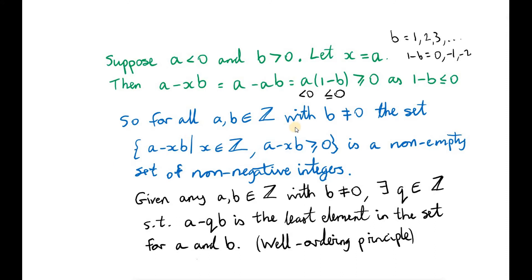Now we've covered all the cases. So for all integers a and b with b not 0, the set of values a minus xb, where x is an integer and a minus xb is non-negative, is a non-empty set of non-negative integers. So we can apply the well-ordering principle. For a given a and b with b not 0, we can find an integer q such that a minus qb is the least element in this set.